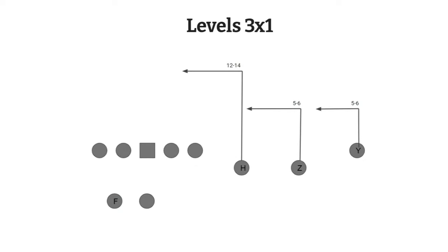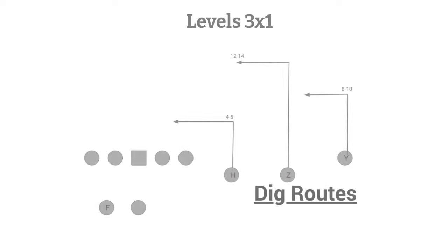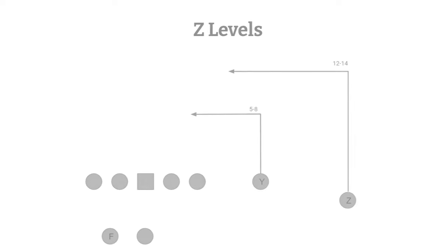Levels can be run with two or three wide receivers. The concept involves three different receivers running end routes at different depths — different levels. You're trying to attack different zones and force defenders to move around. As the name says, you have receivers at different levels and you're trying to get one of those guys open.